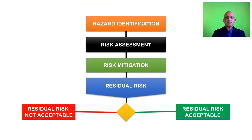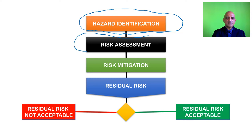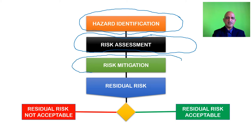Let us look back briefly on the description of the flow. We commence with hazard identification — we identify the hazards. We then conduct a risk assessment and categorize our biological agent into the respective risk group. We also conduct a risk assessment using a risk matrix as was discussed earlier. We then move on to risk mitigation, and this is where the controls come into the picture.